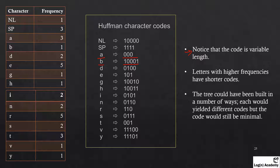Notice that the codes are variable length. For example, 'b' is 5 bits, 'space' is 4 bits, and 'a' is 3 bits. The second key point is that letters with high frequencies have shorter codes. For example, 'e' has frequency 5 and its code is only 3 bits.